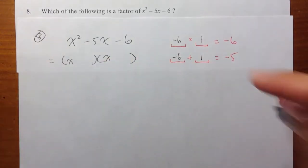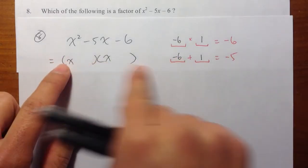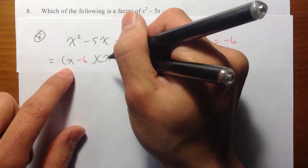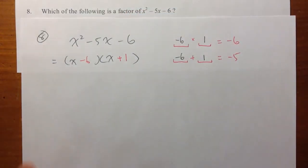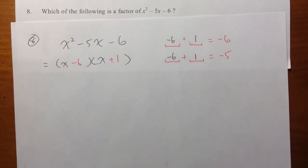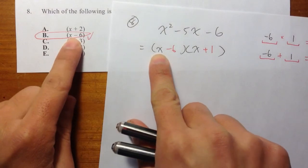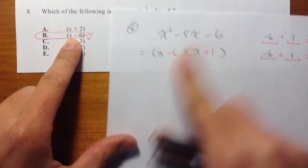It doesn't matter which order you put into a parenthesis. I can put a negative 6 right here, I can put a plus 1 right here. It doesn't matter. This is pretty much how you factor it. This is factor by guess and check, trial and error. We have answer choice B because I see I have x minus 6 the same.